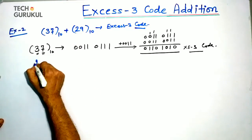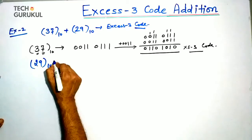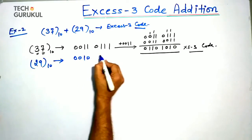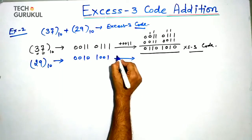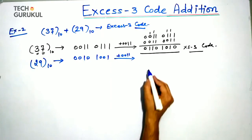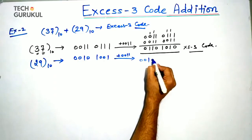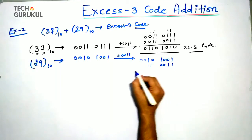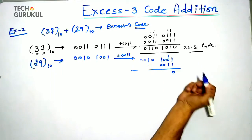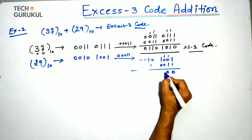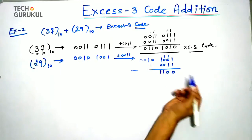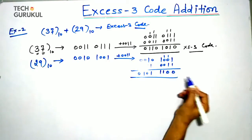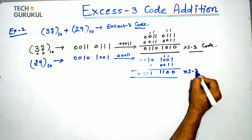Now similarly for 29, we write the BCD equivalent. For 2 it is 0010, and for 9 it is 1001. Now we add 3 here: 0010 plus 0011 gives 0101, and 1001 plus 0011 gives 1100. So this is the XS3 code for 29.